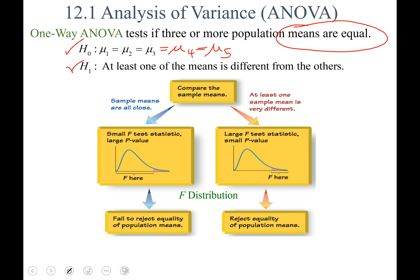So when you go through the thought process, you'll start by comparing the sample means. And if your sample means are close together, that leads you to a small F test statistic, which leads to a large p-value, which you can see on the graph here. And if that is the case, then we are going to fail to reject equality of the population means.